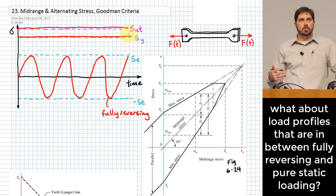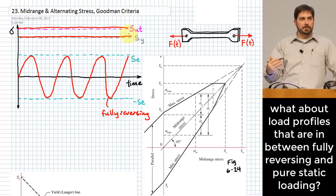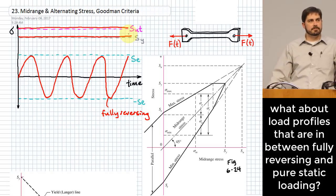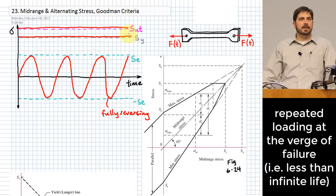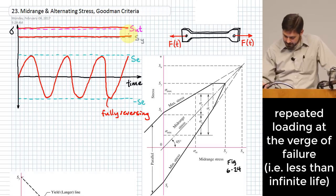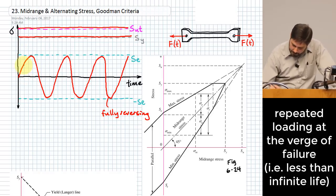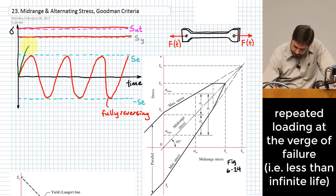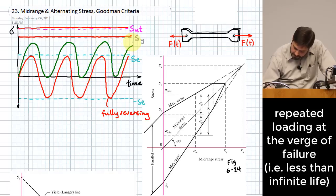There's another possibility: what if it oscillates with a fluctuating load that changes between two extremes that aren't either fully reversing or just a static load? One example is a repeated load — you apply a stress and it comes down and is completely released. It goes up, comes down, touches zero again, and so on. This is called a repeated load.